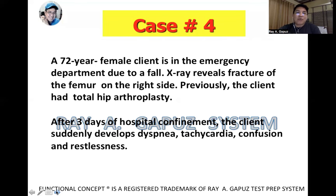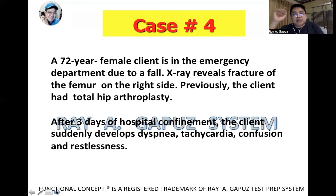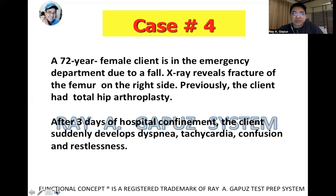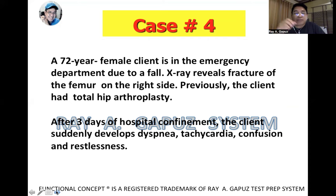Here is case number four. We have a 72-year-old female client in the emergency department due to a fall. Notice that the first sentence already gives you an idea of what the case could be — at first glance it looks like an orthopedic case, but when doing case analysis for the NGN, it's very important that you read from the first sentence to the last word. X-ray reveals fracture of the femur on the right side, and the client previously declined total hip arthroplasty, giving you the clue of both a long bone fracture and a history of hip arthroplasty.